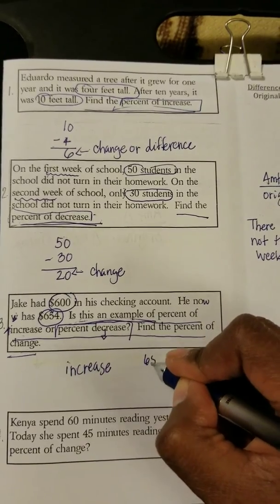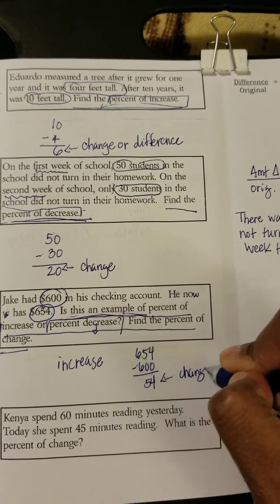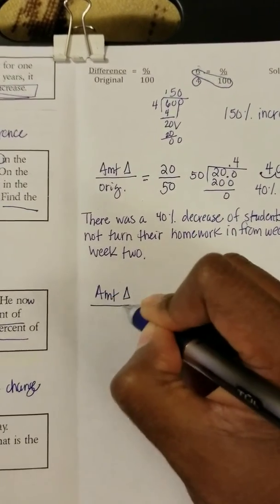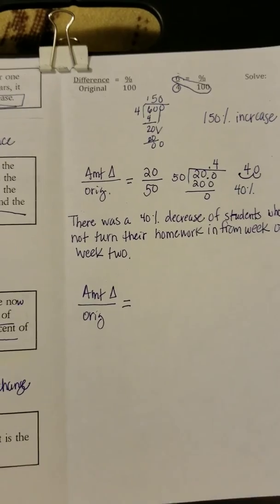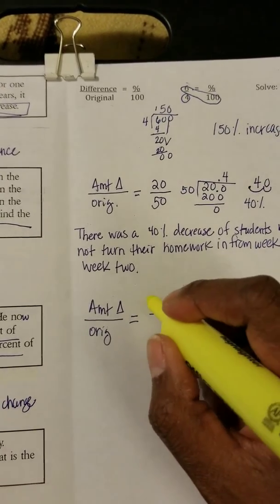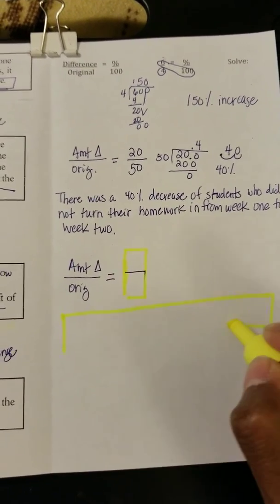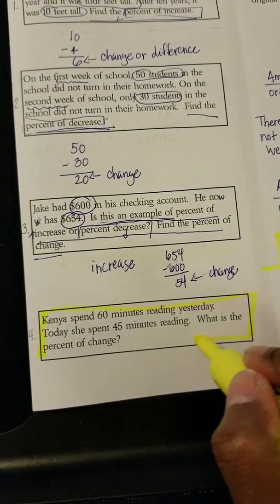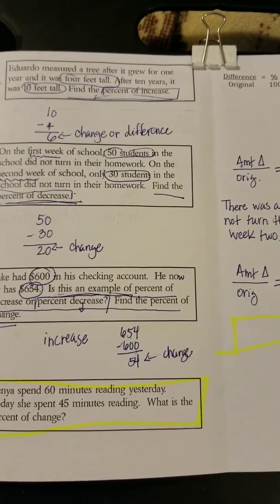We have to find the difference — that's our change. We're going to write amount of change over the original. I want you to set it up and write your answer in a complete sentence. Also complete this one here and we will go over it in class. So we just went over percent of change — finding percent increase or percent decrease. Thank you.